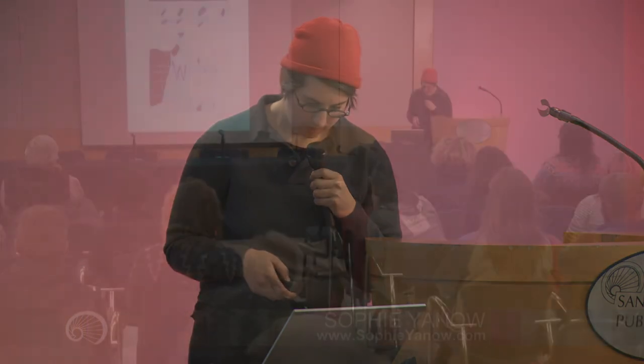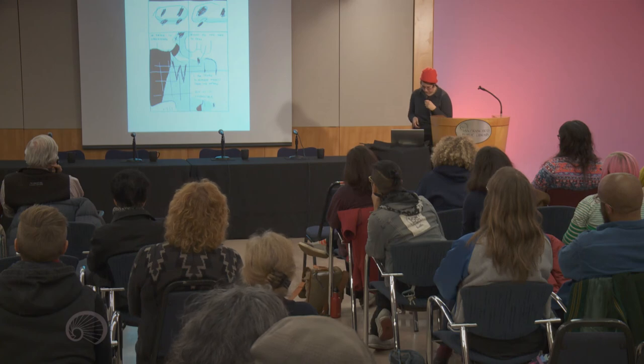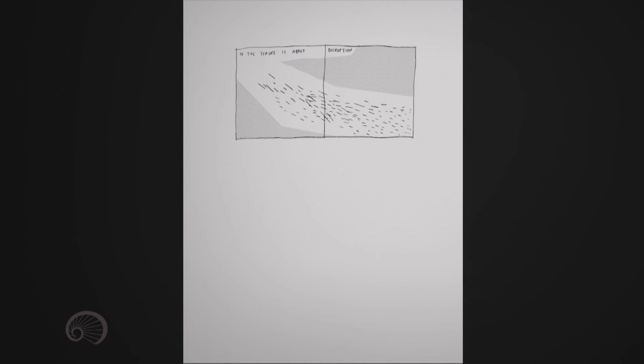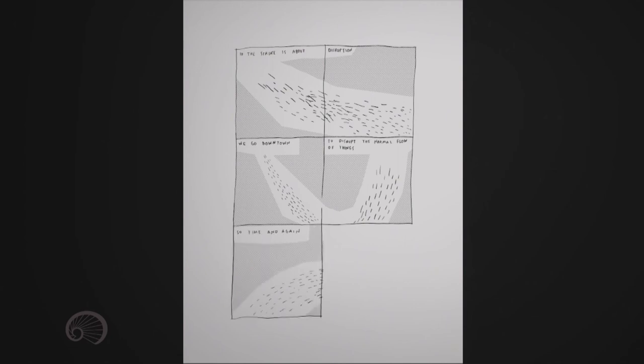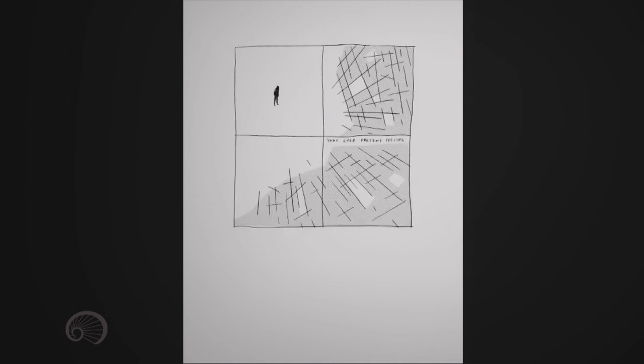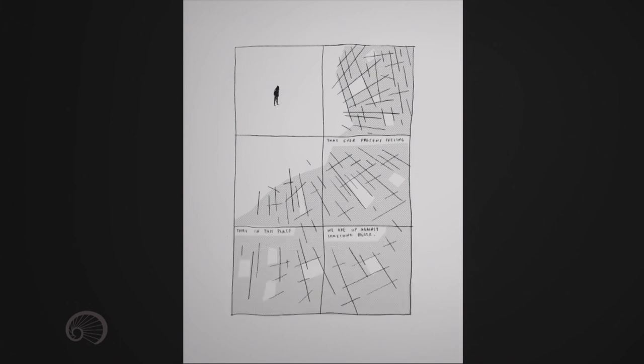Thinking about space, abstracting in order to understand, might be one way to deal. I am trying to remove myself from the picture, but it is impossible. If the strike is about disruption, we go downtown to disrupt the normal flow of things. So, time and again, I drag myself down. That ever-present feeling that in this place, we are up against something bigger. Thanks. How is that?